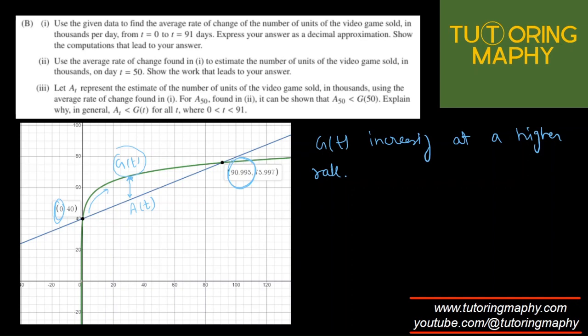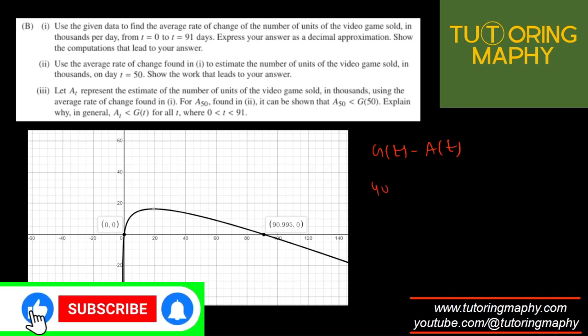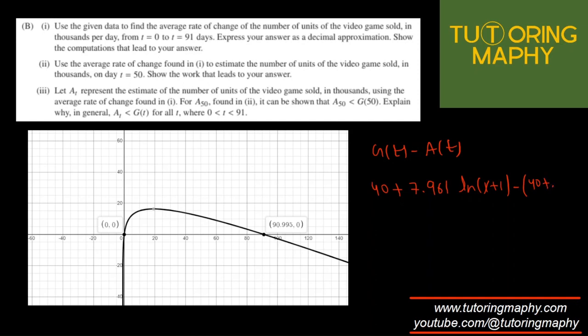Another way is rather than graphing G of T and A of T separately, you can graph G minus A, G of T minus A of T, which is exactly what I did in this particular curve. So if you plug in the value of G, which is 40 plus 7.961 ln X plus 1, minus the straight line, which is 40 plus 0.3956X, this curve is going to look like this. And this, you can clearly see that the difference is always positive.